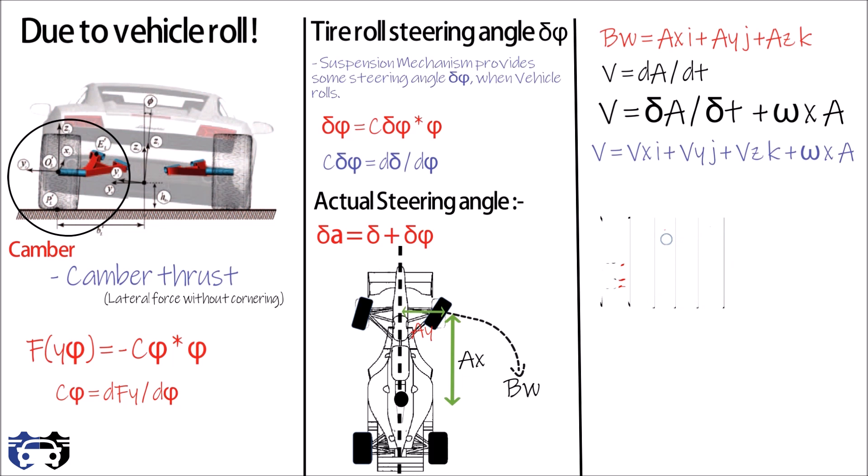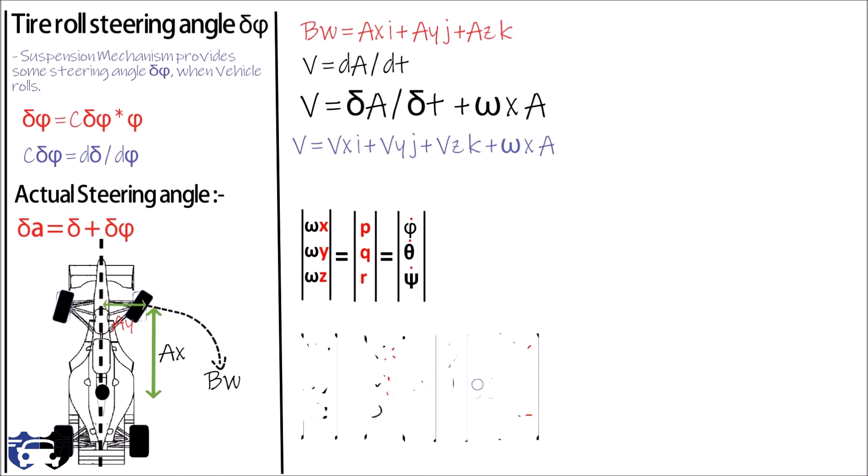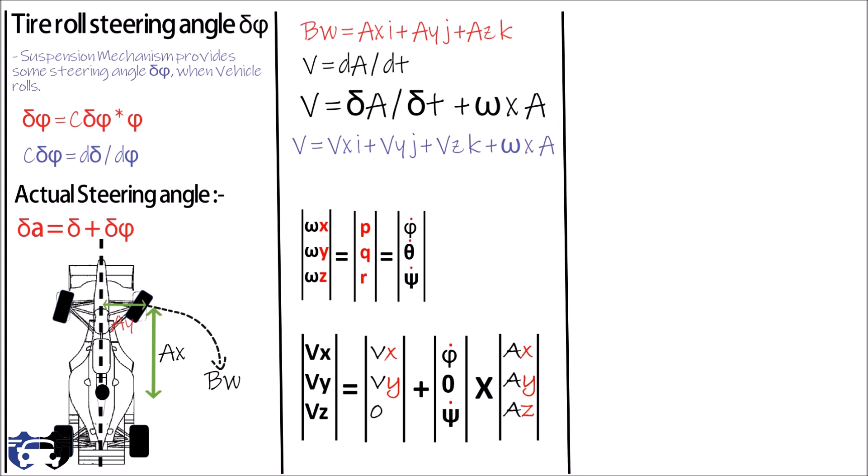Omega has the following values in X, Y, and Z directions. Solving the vector and putting VZ and omega_Y equals to zero, as they are neglected in vehicle roll dynamics, we get the value of velocity of tire in different directions X, Y, and Z.